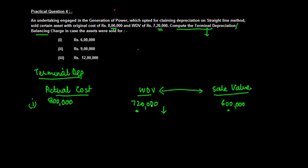The difference between the written down value and the sale consideration, if the sale consideration is less than the written down value, then this difference is allowed as a terminal depreciation. So 7 lakh 20,000 minus 6 lakh which is 1 lakh 20,000 will be the terminal depreciation.